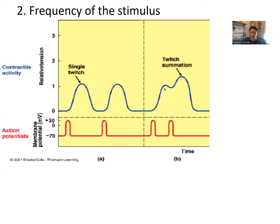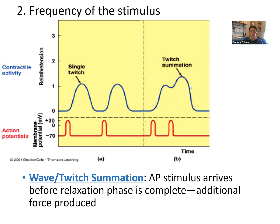What happens is that the tension — the strength of the twitch — actually sums together. So instead of contraction, relaxation, rest, contraction, relaxation, rest, you get a stronger contraction, and there's no rest in between these two. It just gets stronger and stronger and stronger. This process is called wave summation or twitch summation.